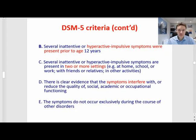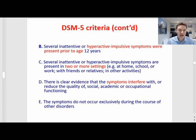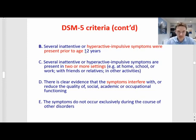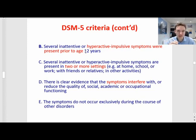I wanted to look together at the other criteria in this manual. The first is that several of these problems need to be present before the age of 12. This is not a magic number — the sense is to say it is something that starts quite early in development. It used to be age seven, but it has been pushed to 12, partly because some parents couldn't really remember if their children had symptoms before the age of seven. The sense is really to say we are talking about something that starts early in life.